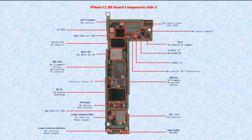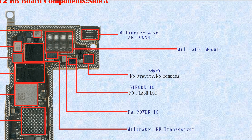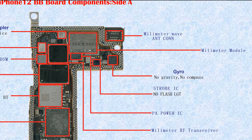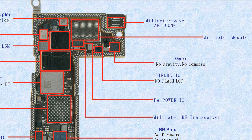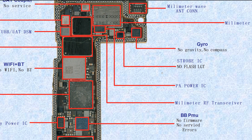Now let's look at the iPhone 12 BB board — baseband board components, Side A. This one is the millimeter wave antenna connector for 5G. The millimeter wave module has already been taken off here. This one is the gyro — if broken, it causes no gravity, no compass. This one is the strobe IC — if broken, it causes no flashlight.